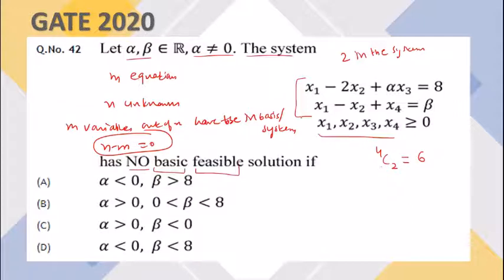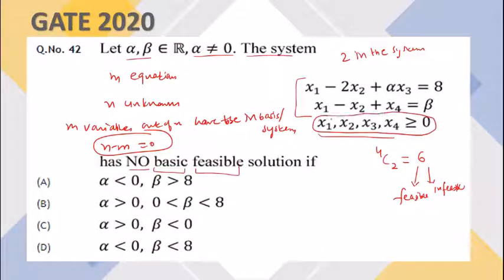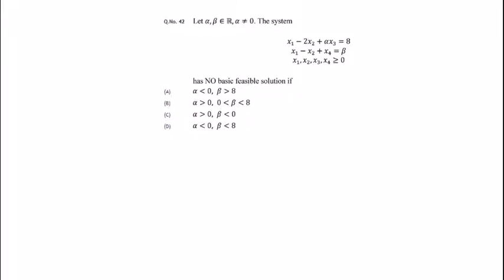Of the six basic solutions, some will be feasible and some infeasible. Feasibility is determined by the non-negativity condition: if all four variables take values greater than or equal to zero, the solution is called a basic feasible solution; otherwise it is infeasible. To solve this problem, we first find all basic solutions and then check feasibility conditions.